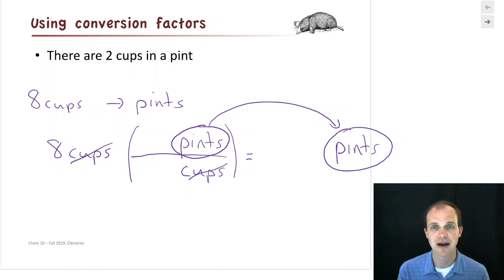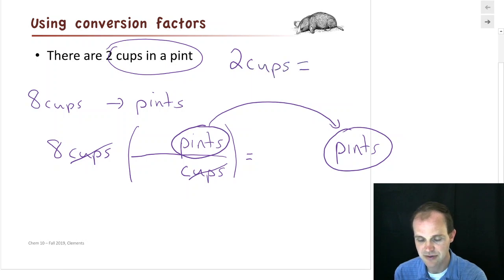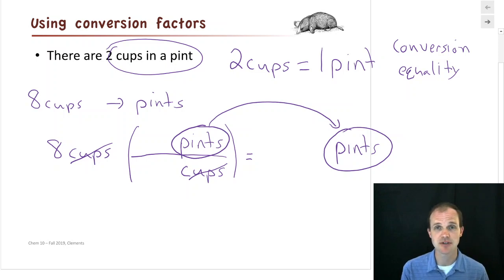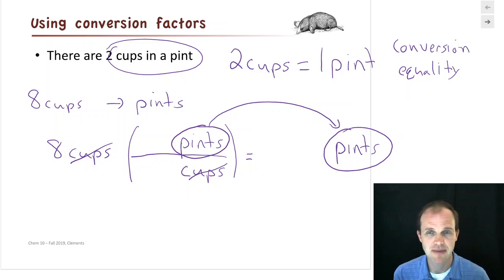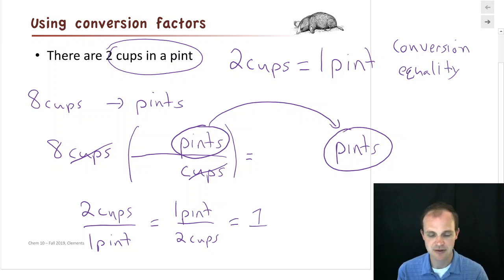So what about the numbers? We know there are two cups in a pint. That's an English sentence, but mathematically we write it as two cups equals one pint — this is called a conversion equality. For every conversion equality, there are two conversion factors: two cups over one pint, and one pint over two cups. Both of those are equal to one.